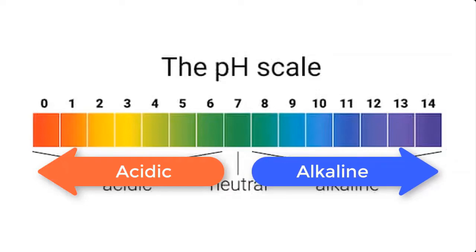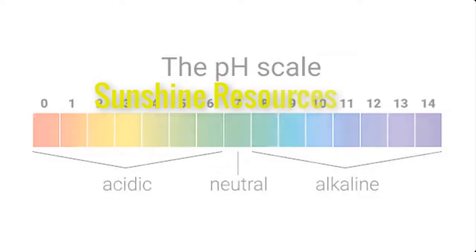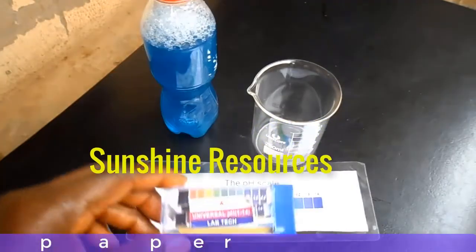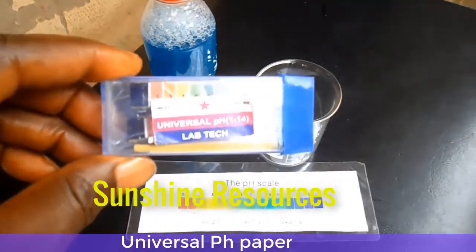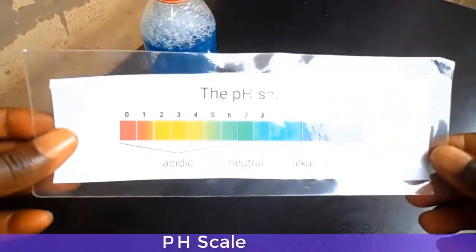Every unit on the scale is represented by a color. In our test, what we're going to do is match the color of our universal pH paper with the pH scale color, and that will determine the pH of our solution. This is our liquid soap solution, this is the universal pH paper, and this is the pH scale.